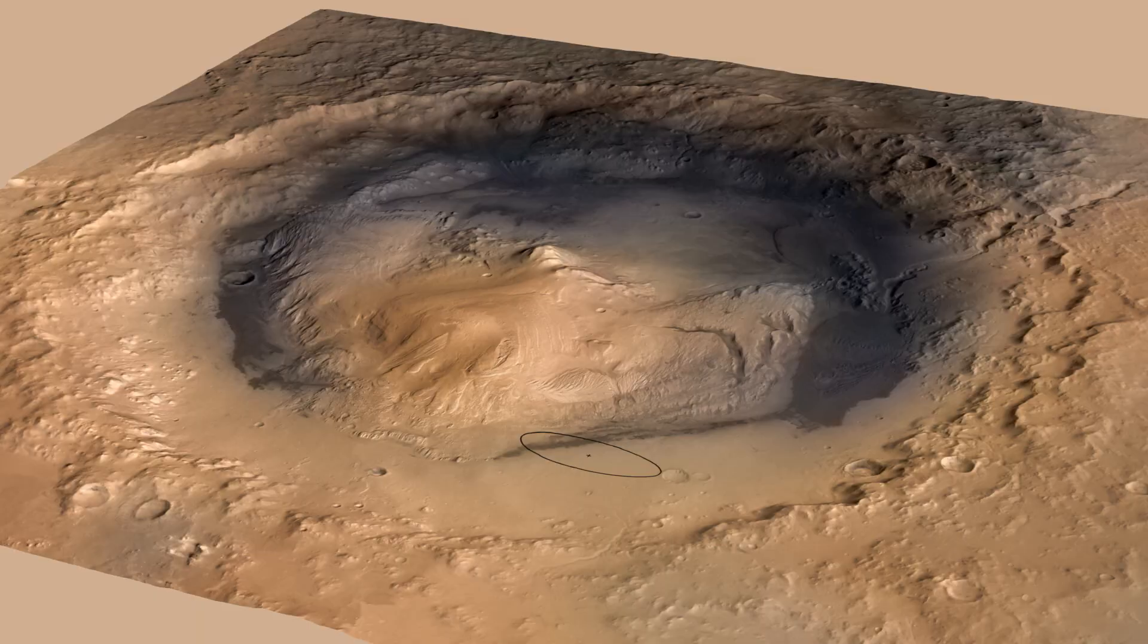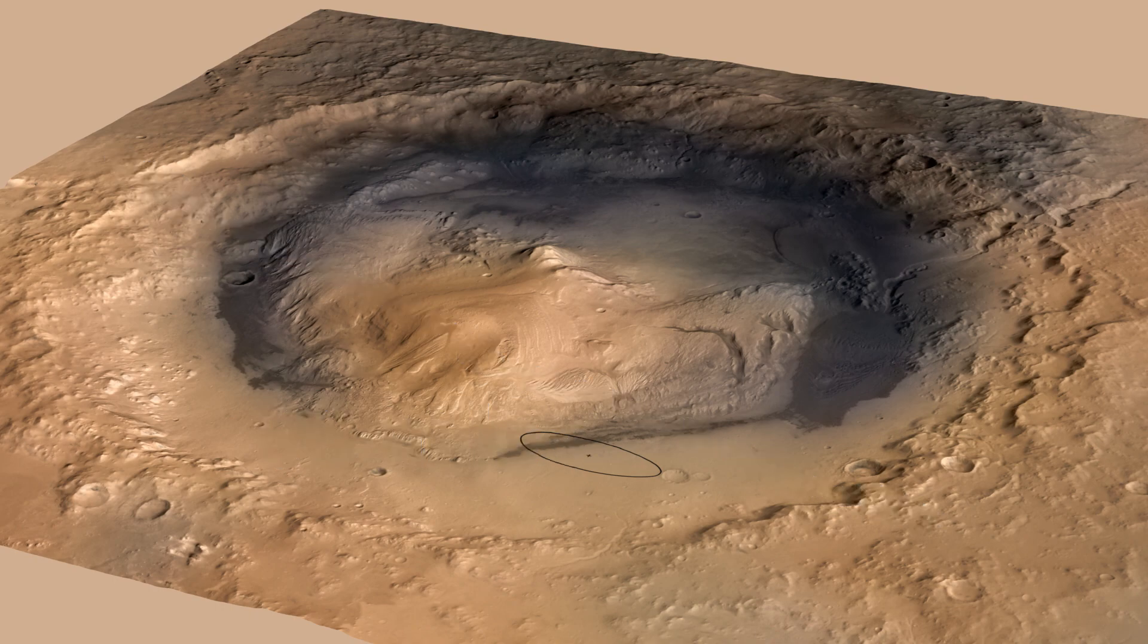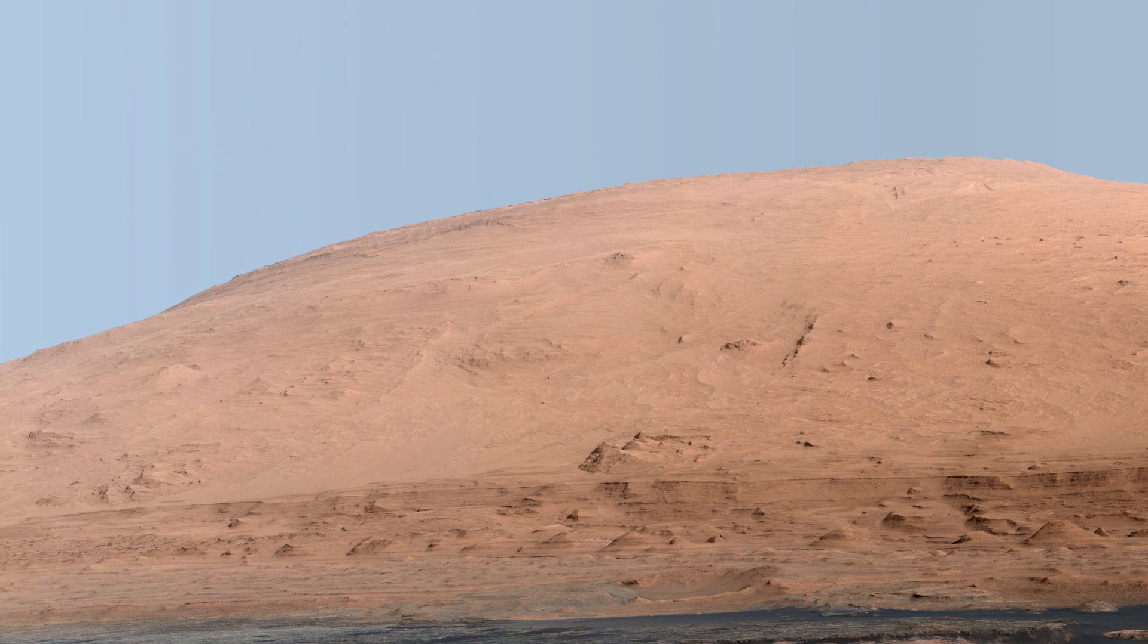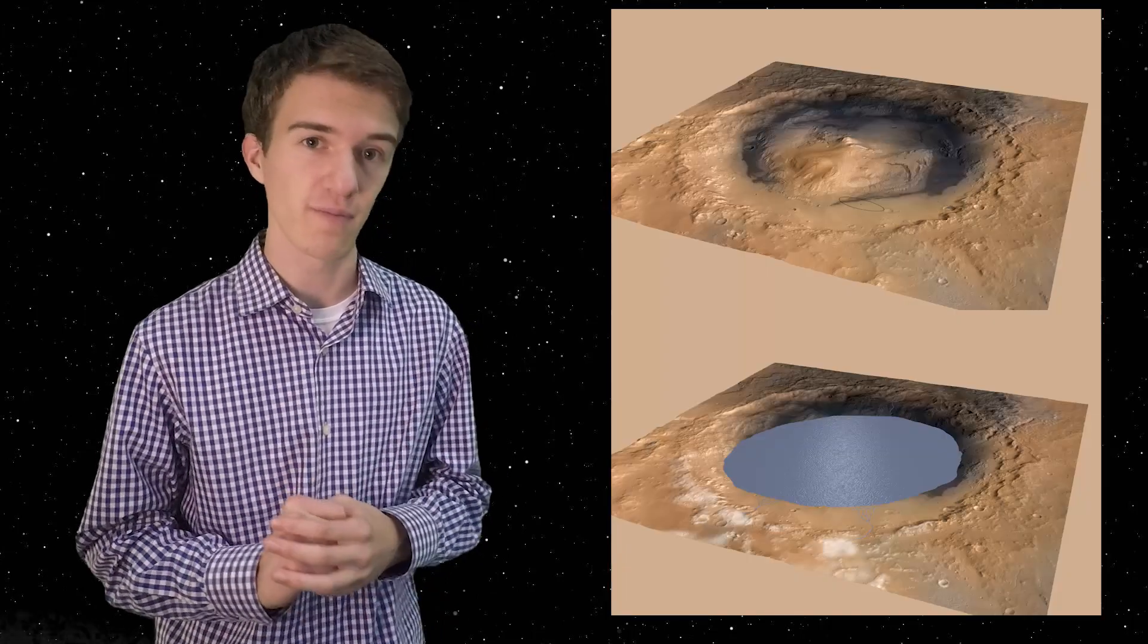Let's begin by talking about where Curiosity started, in a crater called Gale Crater, which is 96 miles in diameter, and in the center has a mountain called Aeolus Mons, also known as Mount Sharp. Mount Sharp is 18,000 feet high, and at the bottom is theorized to be what was once an ancient lake bed.